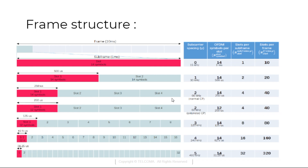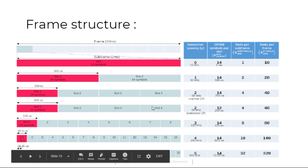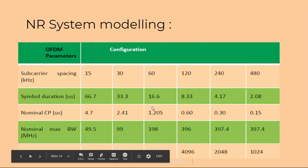The structure is again divided into 4 parts, with each portion containing 14 symbols at 250 microseconds, and some slots containing 12 symbols. We can see the sub-carrier spacings of 15 kHz, 30 kHz, and 60 kHz illustrated here.